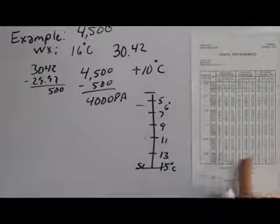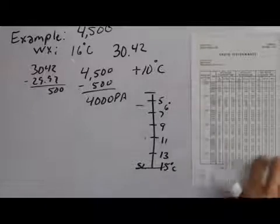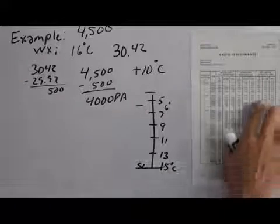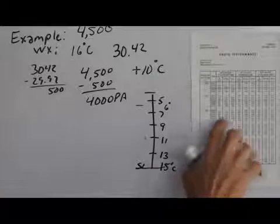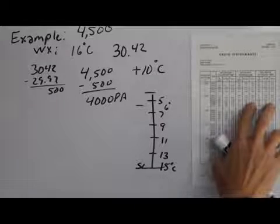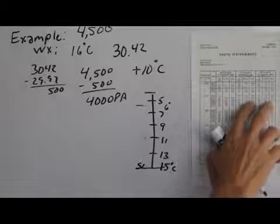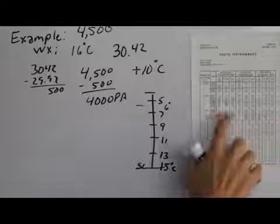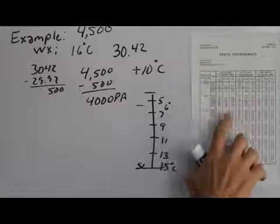So we really could interpolate between the standard temperature and the 20 degrees above standard if we wanted to. Now values are so close together in this scenario, we could either take the worst case scenario or we could interpolate. And we'll go ahead and interpolate just for practice.